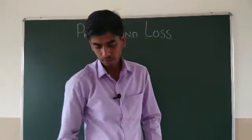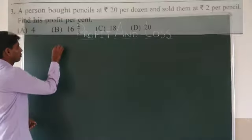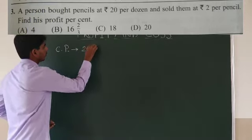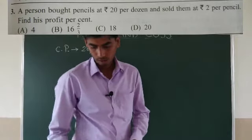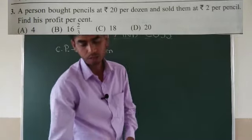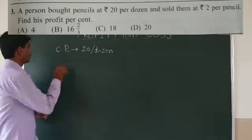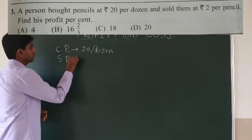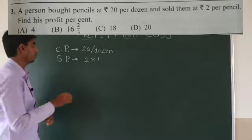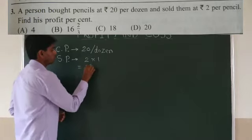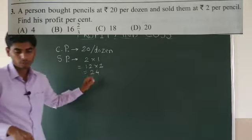Next question: a person bought pencils at Rs 20 per dozen. He bought them by the dozen, so the cost price is Rs 20 per dozen. He sold them at Rs 2 per pencil. Since one dozen means 12 pencils, 12 into 2 equals 24. So our selling price is Rs 24.